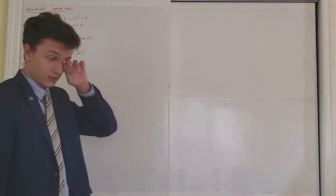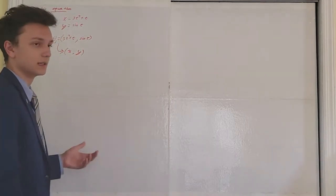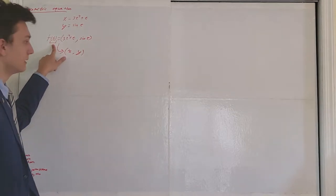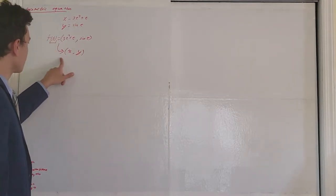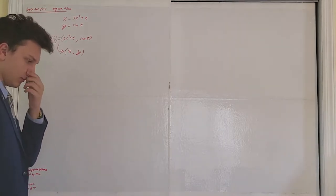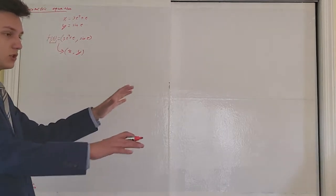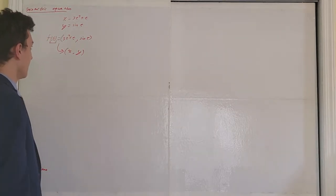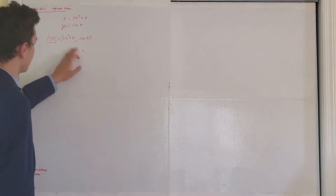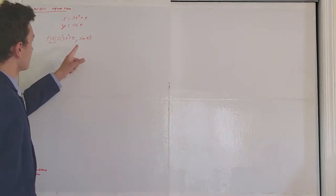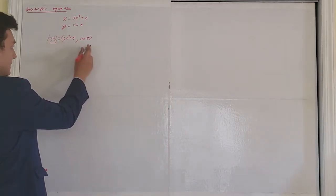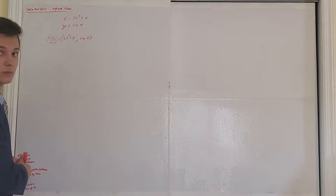The way parametric equations are shown on the BC exam is just in this fashion: you have a function defined in terms of t, and for any time t you're given an x and y-coordinate. This is often used to model two-dimensional planar motion — like a car driving according to this function, where at any time t you know exactly where the car is in two-dimensional space.